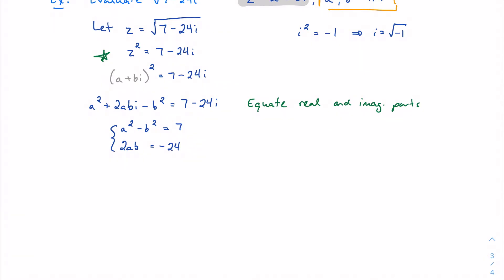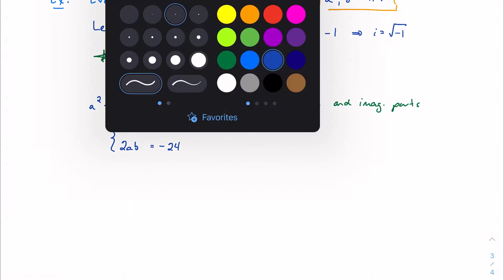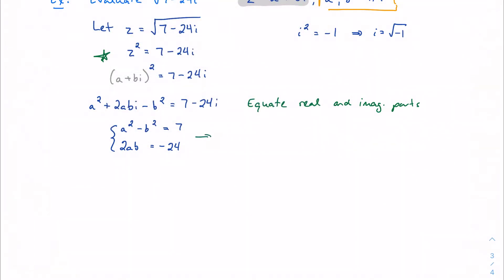If I want to go even farther, when we begin to simplify this, make this a little bit easier: a squared minus b squared equals 7, and ab equals negative 12. Now I have a system I can solve just like we would normally.